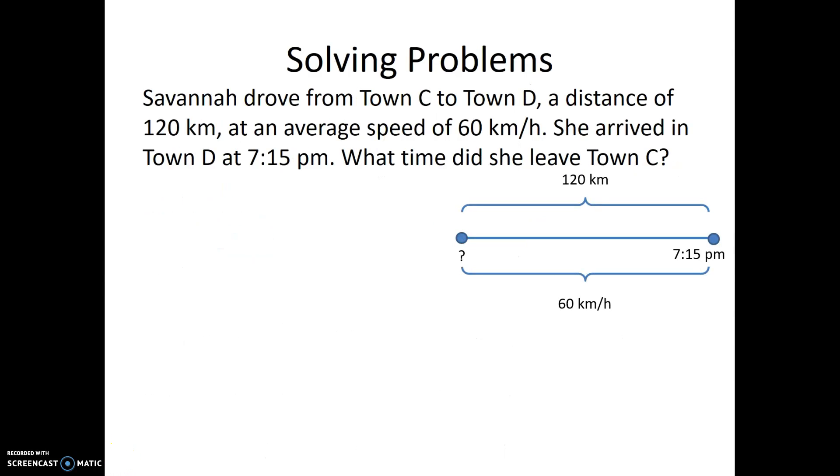Savannah drove from town C to town D, a distance of 120 kilometers, at an average speed of 60 kilometers per hour. She arrived in town D at 7:15 p.m. What time did she leave town C? In this problem, we're going to find the amount of time that she spent driving and subtract it from the time she arrived. So let's label our word problem. Here's our distance and here's our speed, and we want to know time, so we'll put a question mark there.